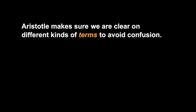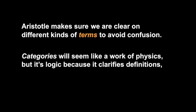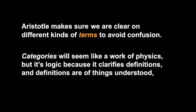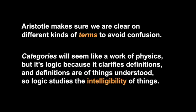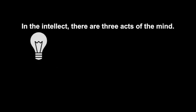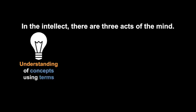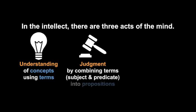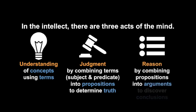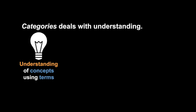Aristotle makes sure that we're clear on different kinds of terms in order to avoid confusion. Categories will seem like a work of physics or maybe biology, but it's logic because it clarifies definitions, and definitions are of things that we understand. So logic studies the intelligibility of things. In the intellect, there are three acts of the mind: the first is understanding of concepts using terms; the second is judgment by combining terms into propositions to determine the truth; and then reason, by combining propositions into arguments, we discover conclusions. Categories deals with understanding.